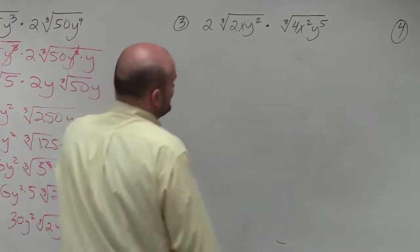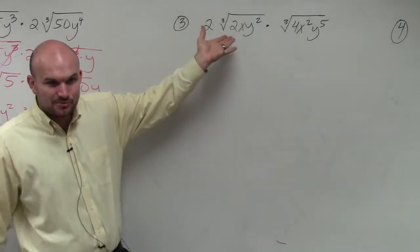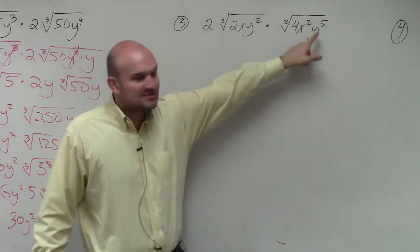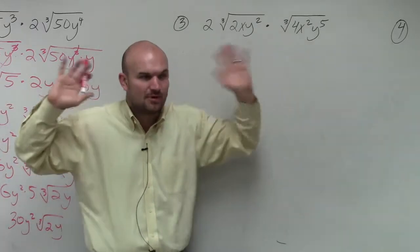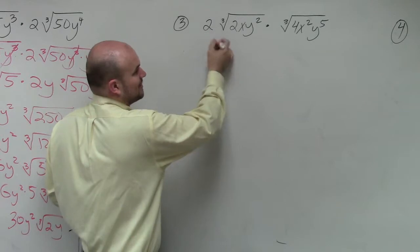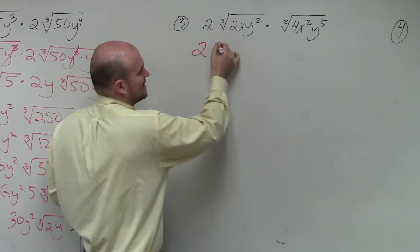So all you're basically doing, guys, you see we can't really take the cube root of anything in here except for this y to the fifth. But you know what? Instead of just doing that one by itself, I'm just going to multiply everything. So I don't really have anything to multiply two by in this case. So I'm just going to leave two on the outside.